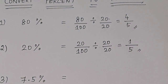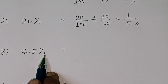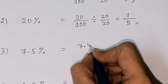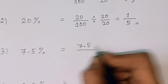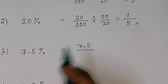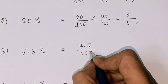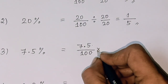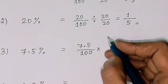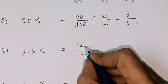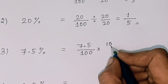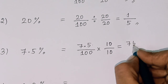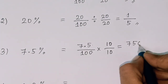This is the answer. Third one: 7.5% — so decimal. 7.5 divided by 100. Since there is a decimal, multiply both numerator and denominator by 10, giving 75 over 1000.